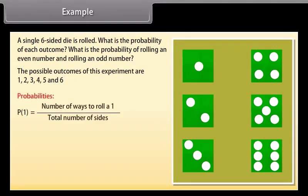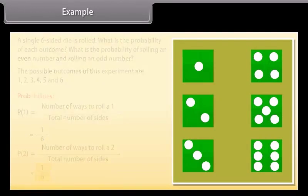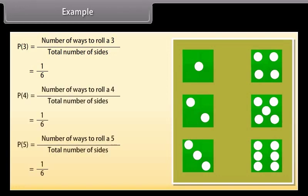Now let's find probabilities. Probability of 1 is number of ways to roll a 1 by total number of sides, which equals 1 by 6. Probability of 2 is 1 by 6. Similarly, the probability of 3 is 1 by 6. In the same way, we will find the probabilities of 4, 5, and 6.